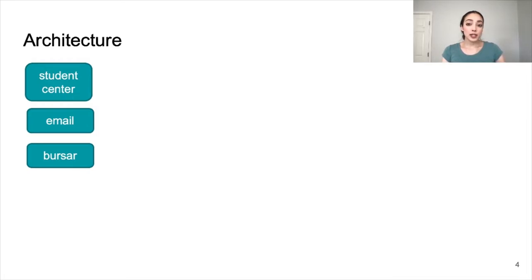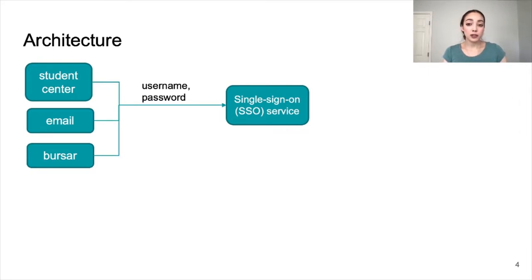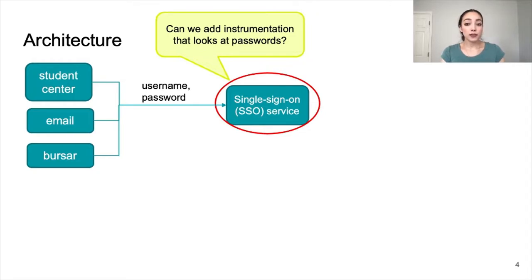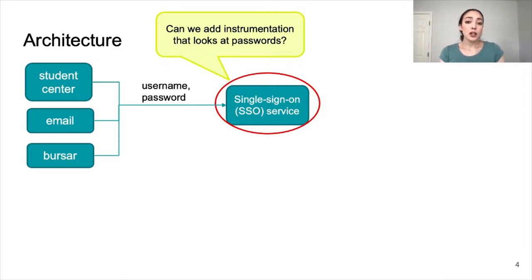At both universities, when a student or employee tries to log into their email, bursar, or other school-related account, they do so through a single sign-on service that processes their login request after receiving their username and password. Thus, in order to observe passwords, we need to instrument this SSO server. However, we face a few challenges in doing so. This service affects a lot of people, we don't want to affect the performance of the system, and passwords are very sensitive, so we can't just store them on disk. Prior work looks at the password hash and compares it to other submissions, but this doesn't allow us to get insights into other characteristics of the submitted password. So how can we design a measurement service that measures information about passwords without compromising the security or performance of the login server?